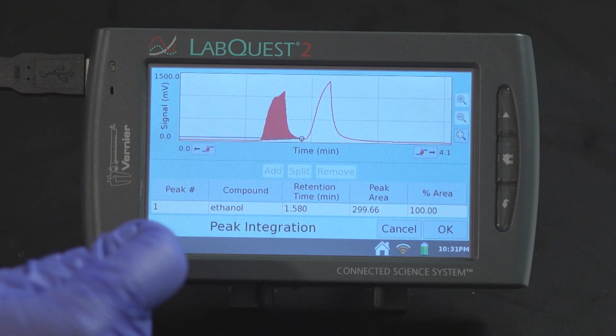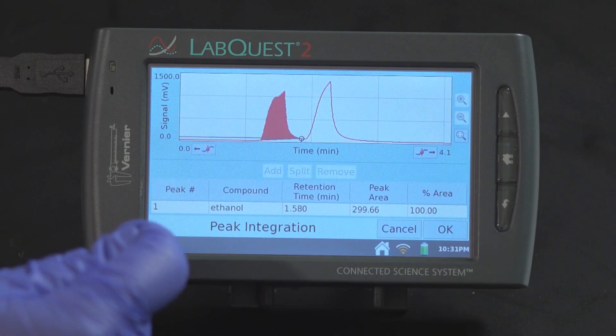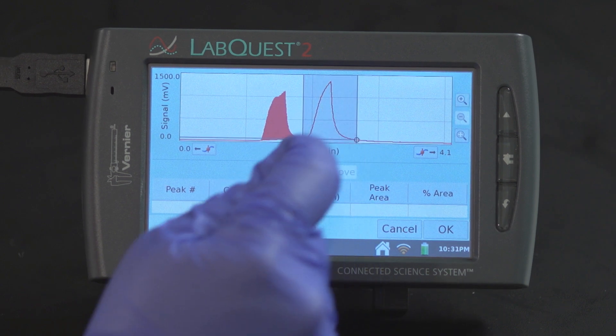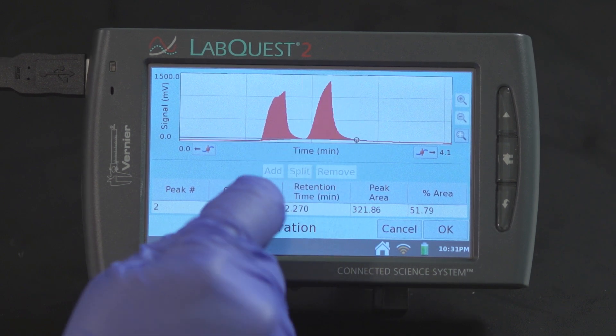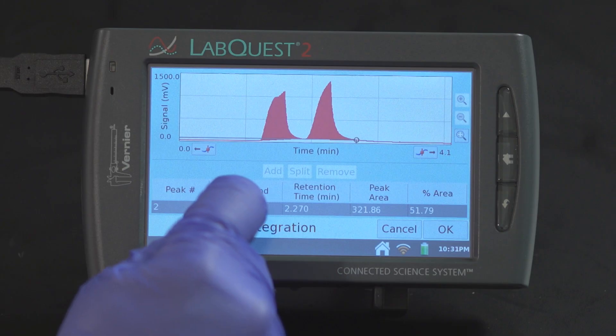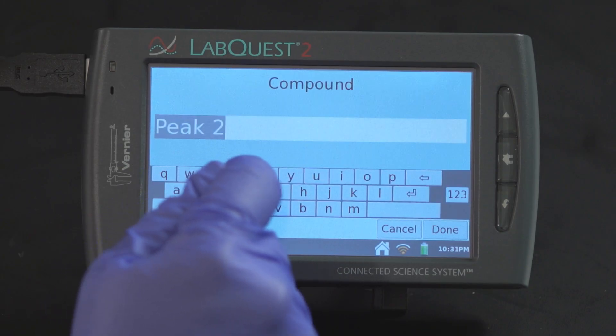Repeat these steps until all peaks have been analyzed. For the second peak, type in 2-butanone.